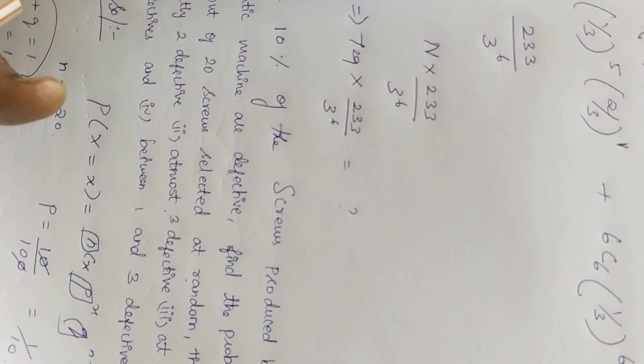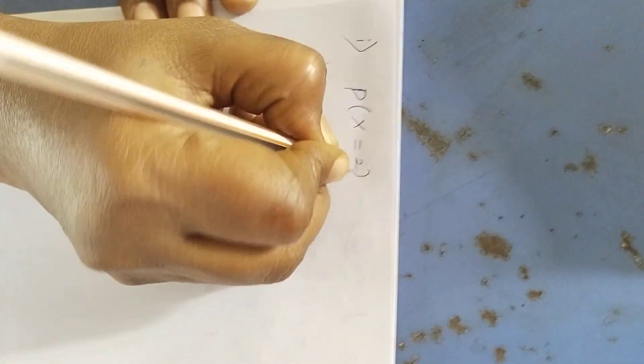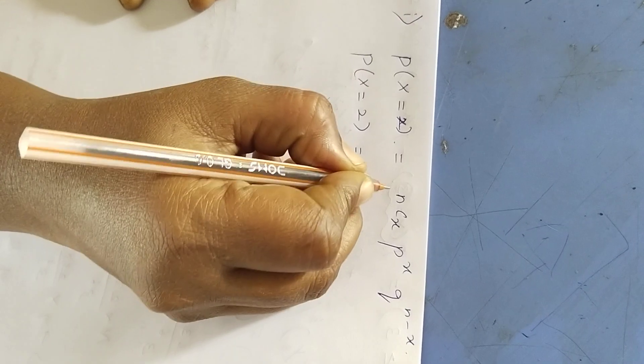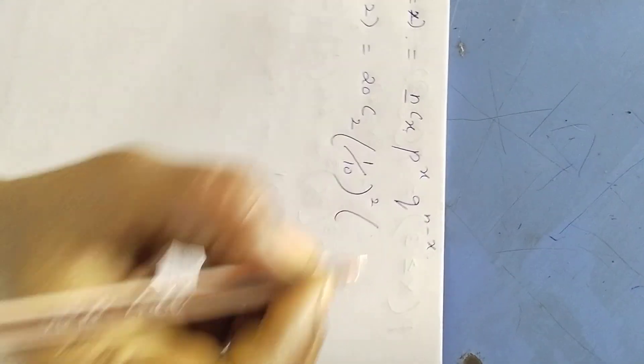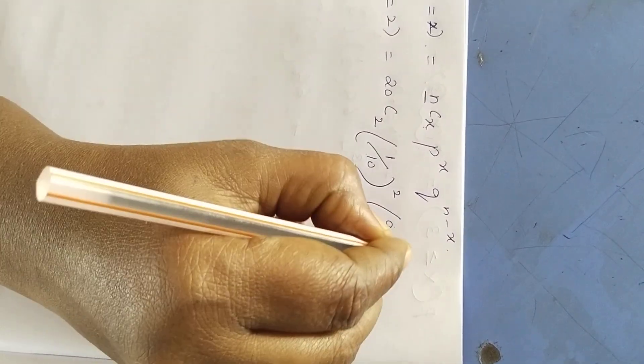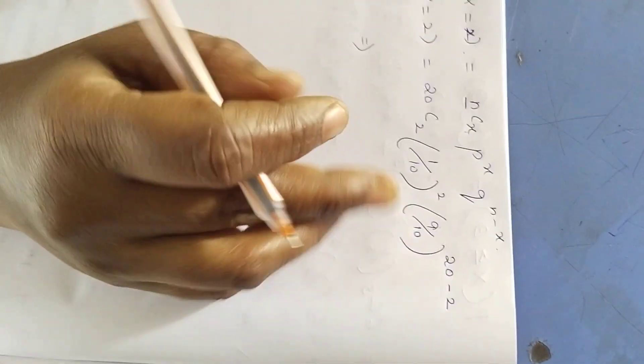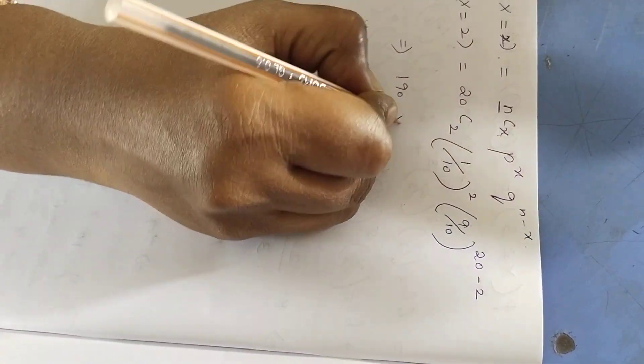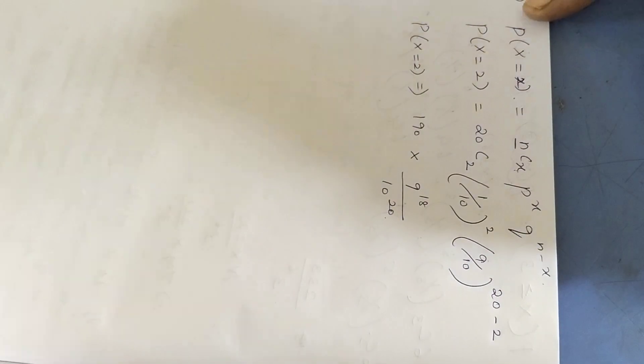Now I will go to subdivisions. We know the p-value is equal to 2. nCx, p power x, q power n minus x. Now x is equal to 2, n is equal to 20, x is equal to 2, p-value 1 by 10 whole power 2, q-value 9 by 10 whole to the power of 20 minus 2. So 20C2, 1 by 100 into 9 to the power of 18 by 10 to the power of 20. This value for x equal to 2, first subdivision over.